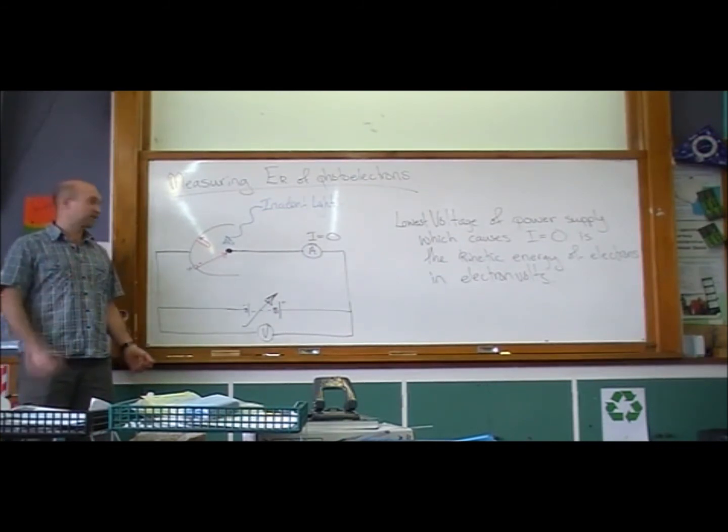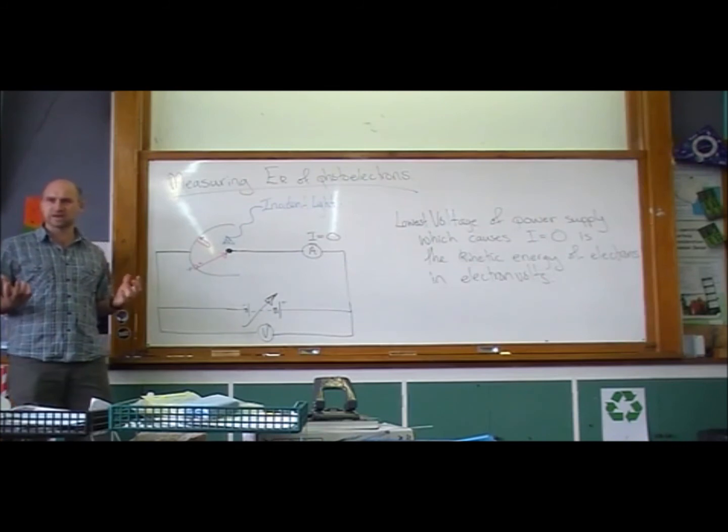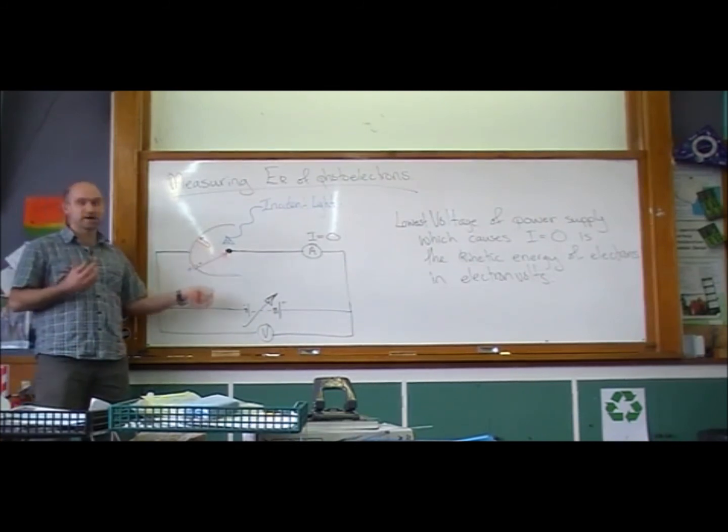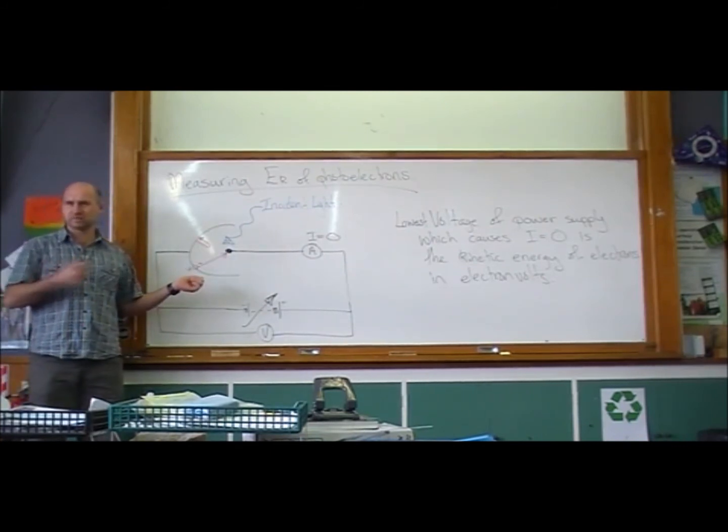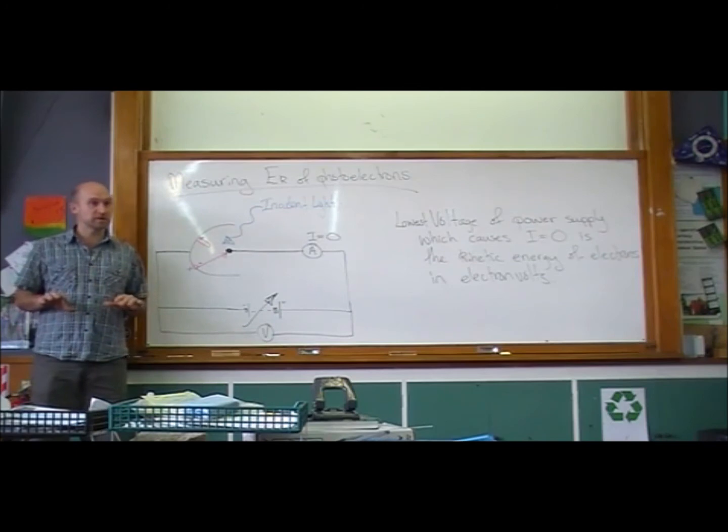And then what's even more interesting, if we turn down the frequency of light, if we shine red light, most metals don't emit any photoelectrons with red light. And so we're getting some really interesting results. We seem to find that there's like a minimum frequency below which no photoelectrons are emitted.